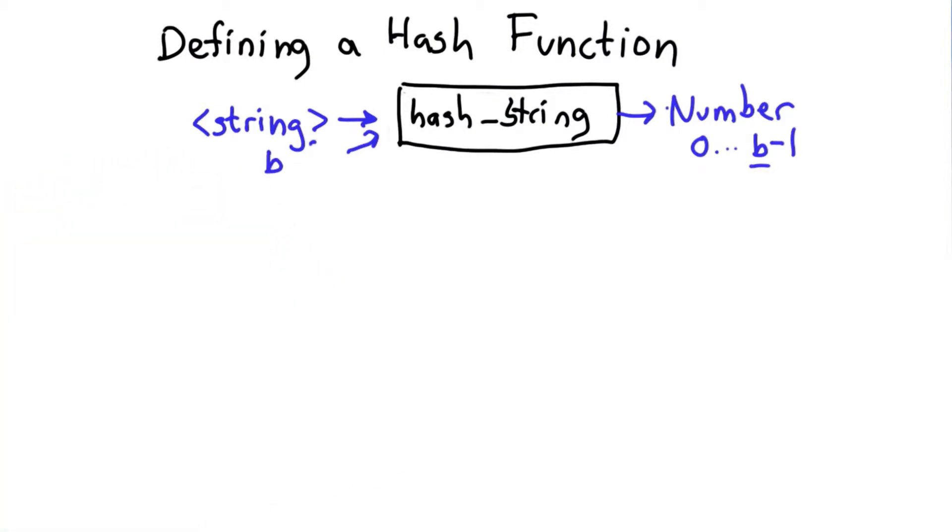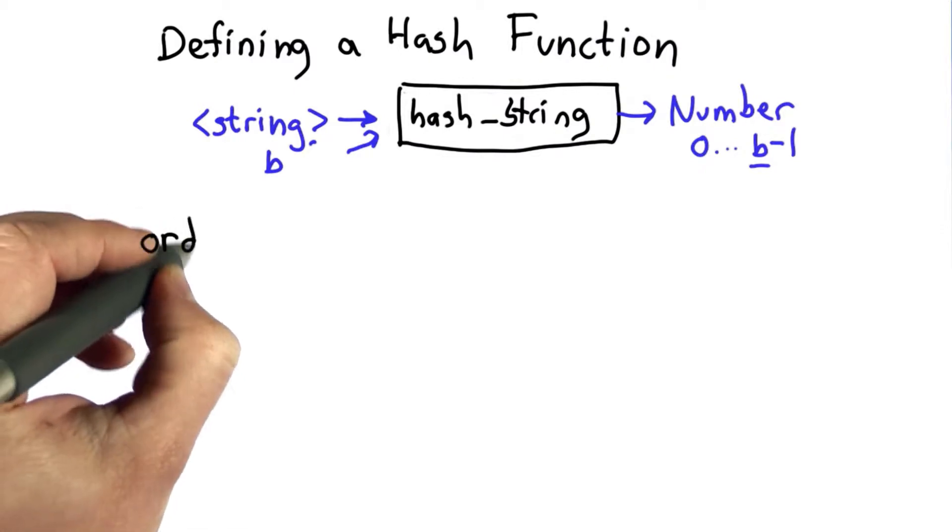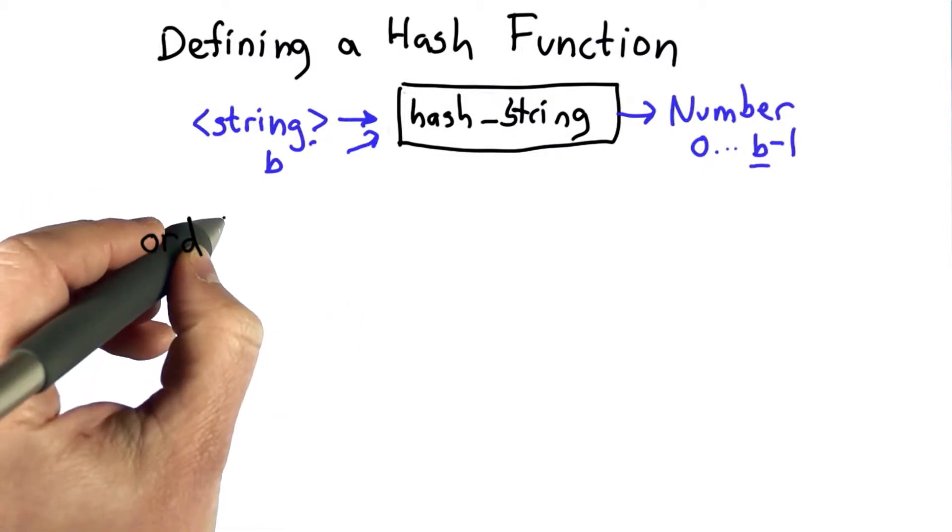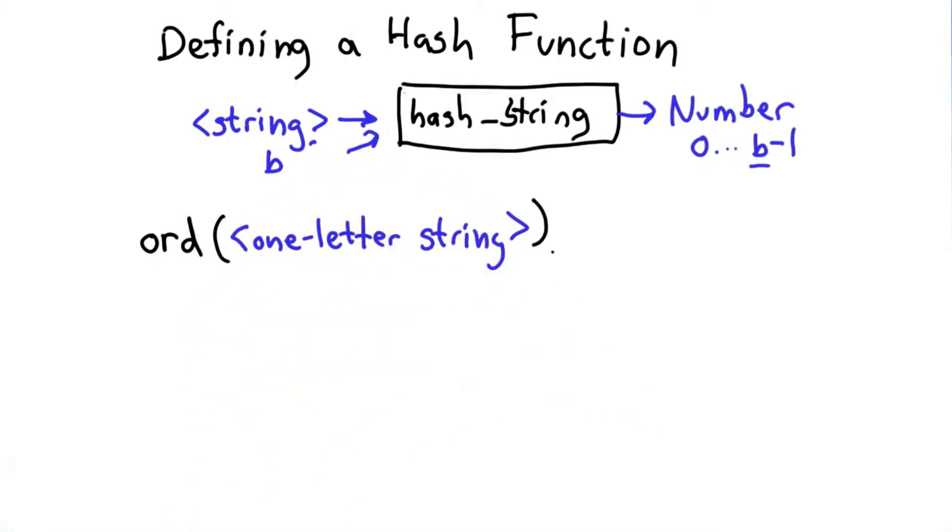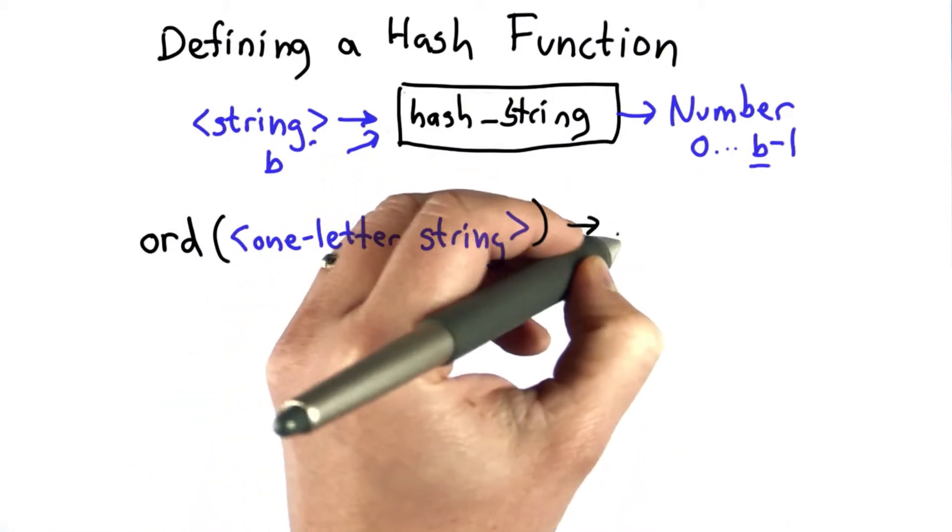What we haven't seen yet that we're going to need for this function is a way to turn a string into a number. Python provides an operation to do that. It's called ord for ordinal. And what ord takes as its input is a one letter string and produces as its output a number.